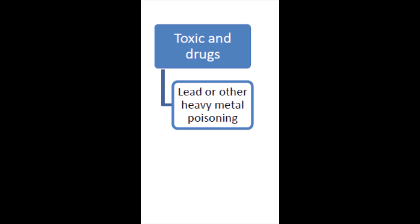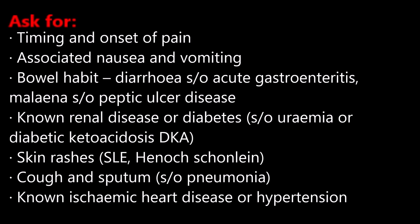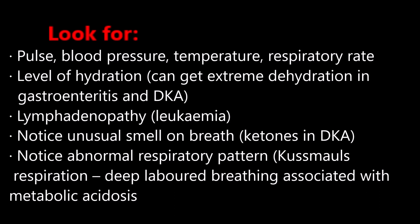For extra-abdominal pain, ask about timing and onset, associated nausea and vomiting, bowel habit, diarrhea suggestive of acute gastroenteritis, and melena suggestive of peptic ulcer disease. Ask about adrenal disease or diabetes — suggestive of uremia or diabetic ketoacidosis — and skin rashes suggesting SLE or Henoch-Schönlein purpura. Ask about cough suggestive of pneumonia, and known ischemic heart disease or hypertension. Assess pulse, blood pressure, temperature, respiratory rate, and level of hydration — extreme dehydration can occur in gastroenteritis and diabetic ketoacidosis.